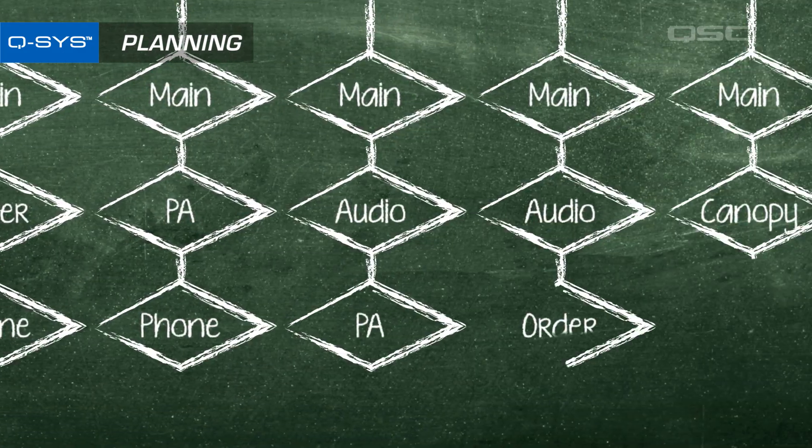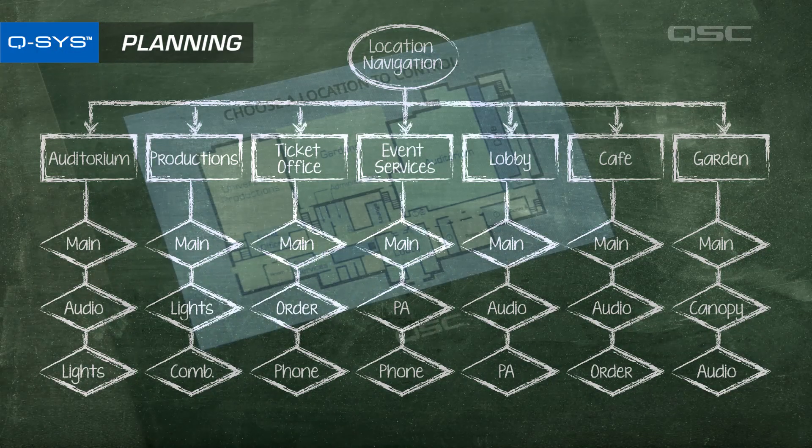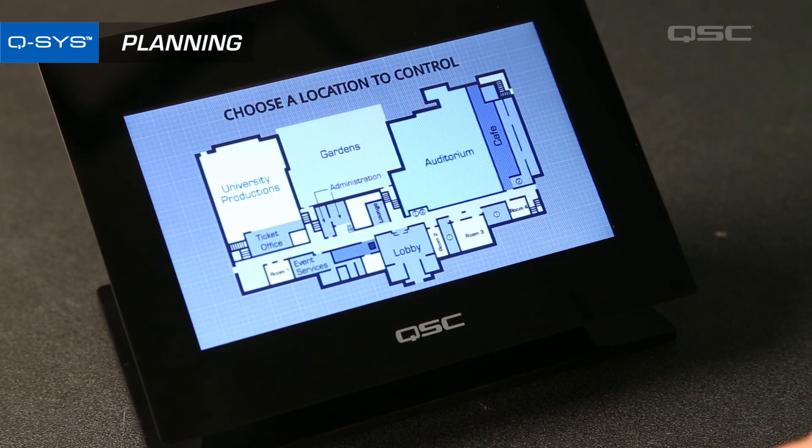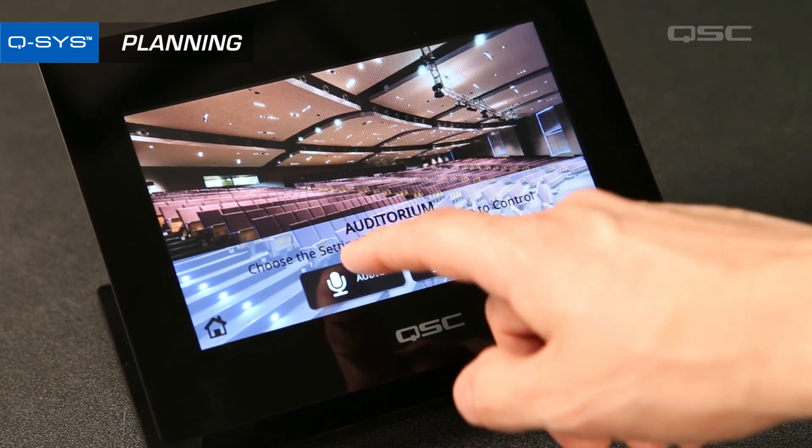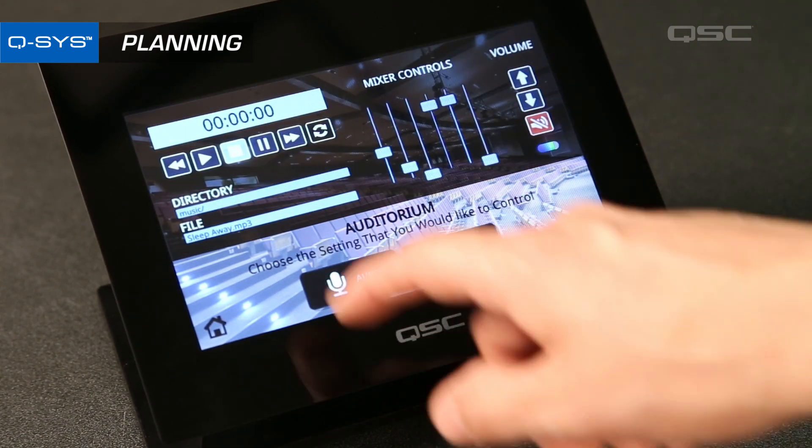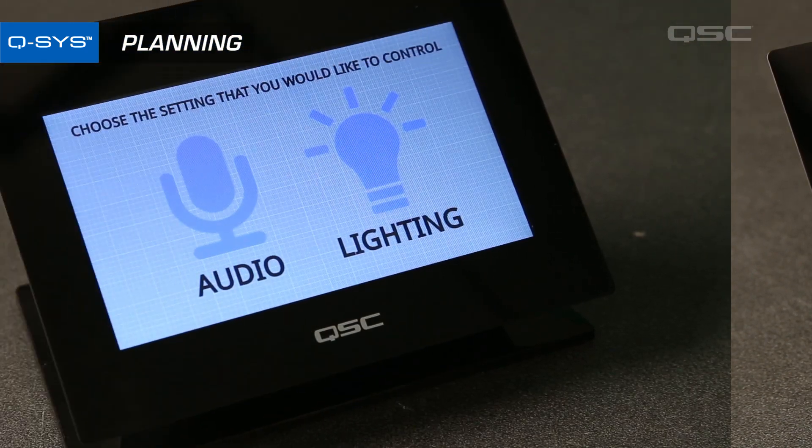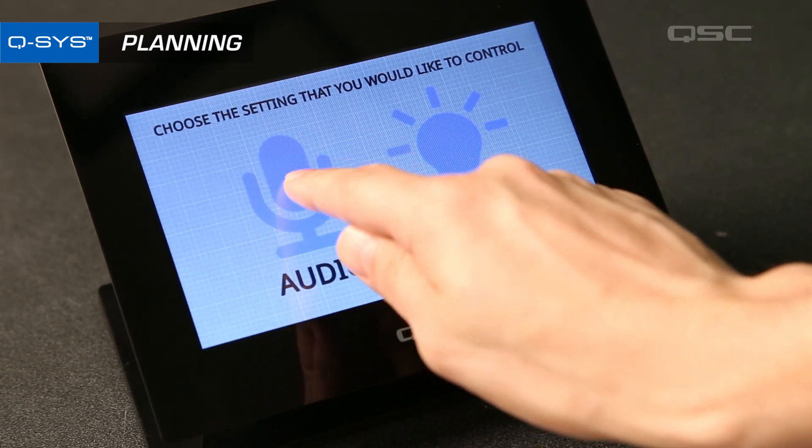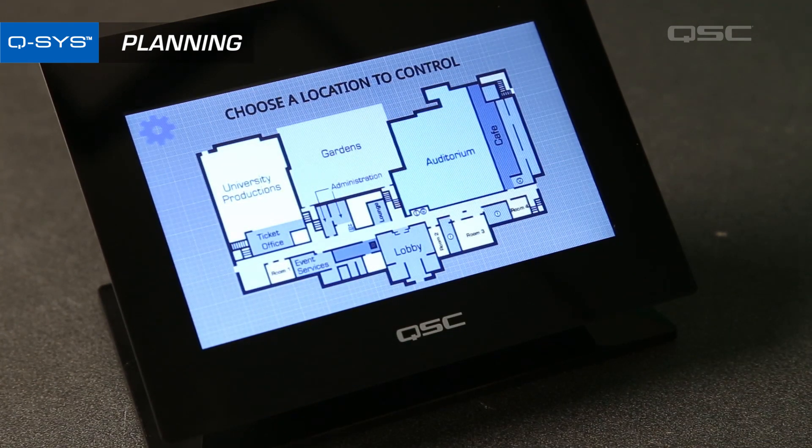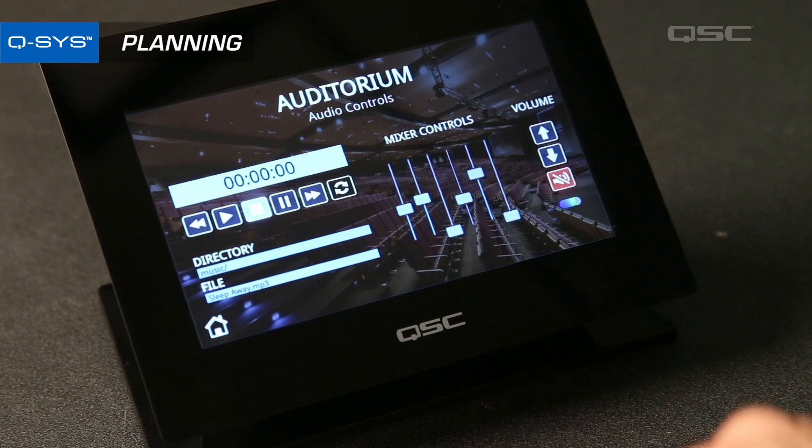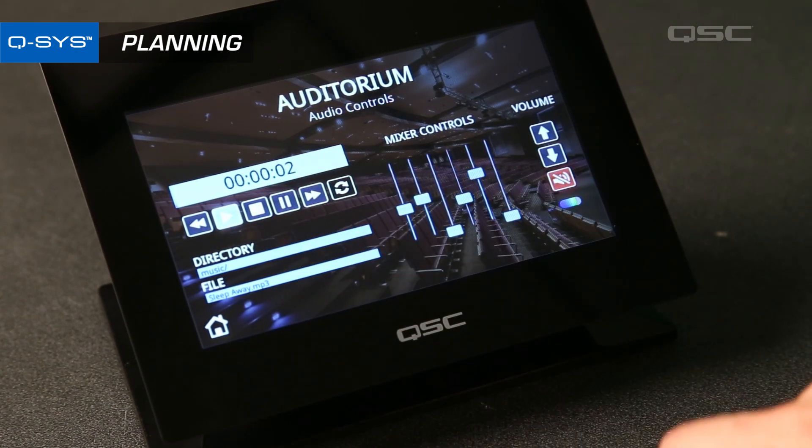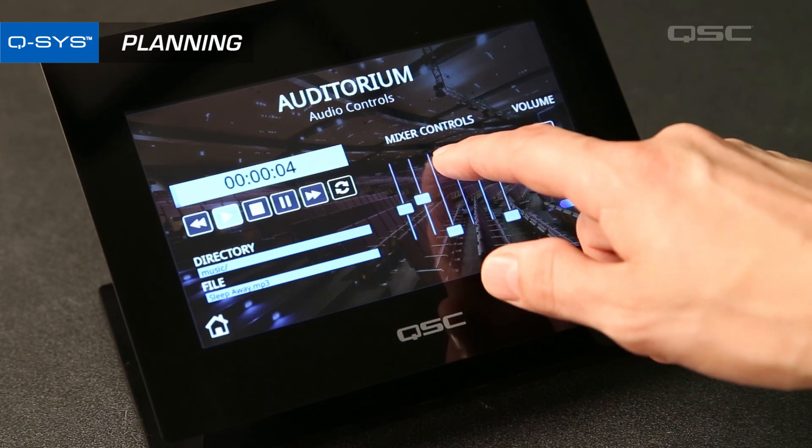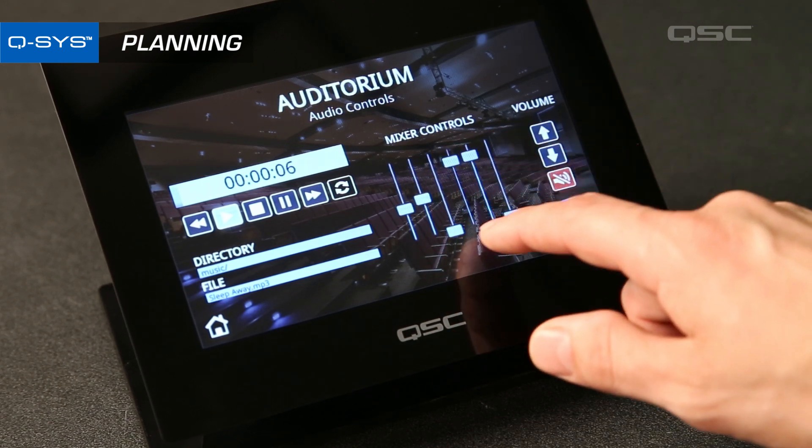Like everything in design, there's no right answer here. Maybe you want a main page that lets the user navigate to each of the rooms in the venue, and from there you can choose between audio control or lighting control within that room. Or maybe it makes more sense to choose between audio or lighting first and then select a room. It will all depend on the different tasks you want to make available, and it's worth the time to organize them in a way that lets the user accomplish each task as easily as possible.